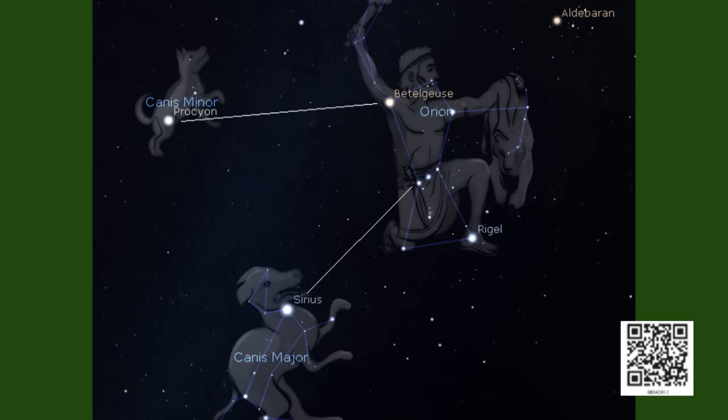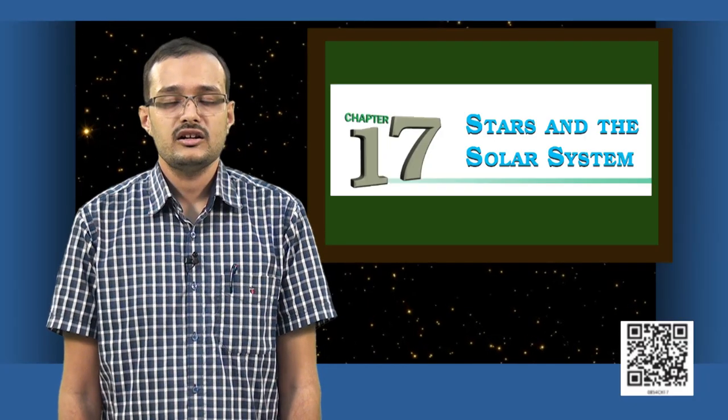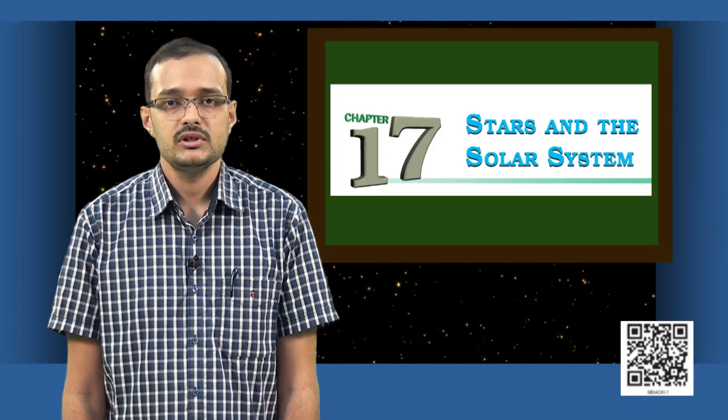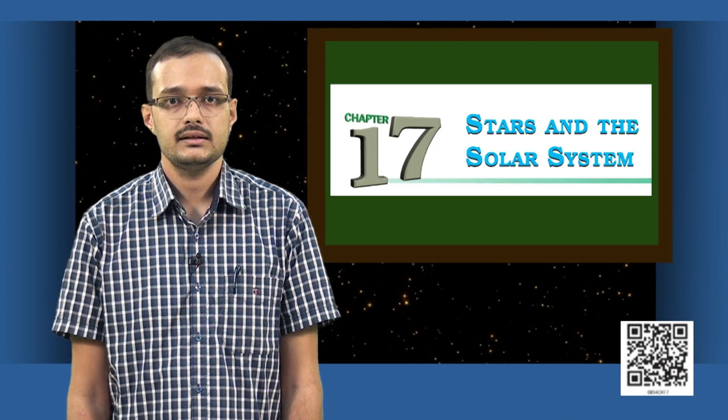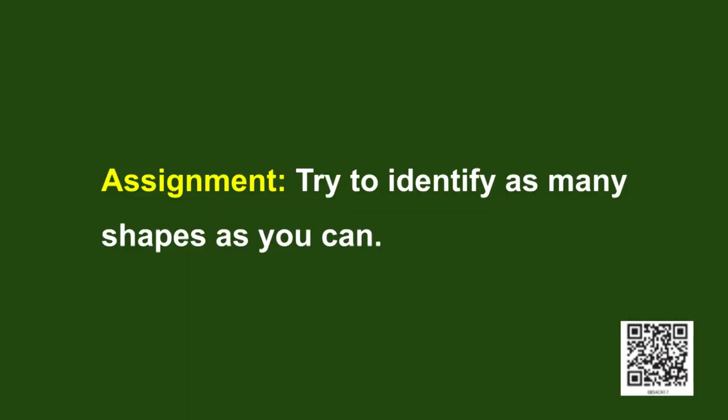In fact, Sirius is a part of another constellation called the Canis Major. There are many other identifiable shapes in the night sky. Now here is an assignment for you. Try to identify as many shapes as you can in the night sky.